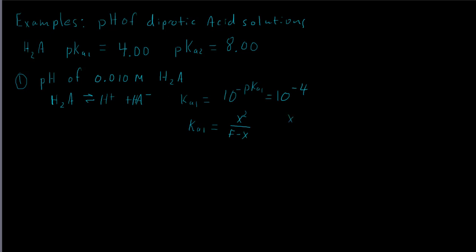Here x represents two things: it's the H+ concentration and also the HA- concentration. F is our formal concentration, which is 0.01 molar. We're going to work this out by solving the quadratic equation.